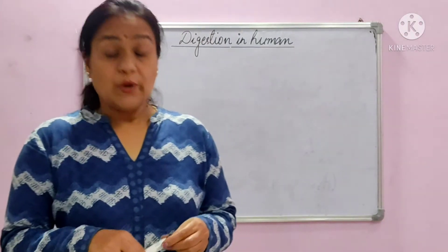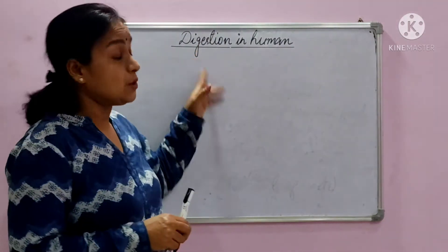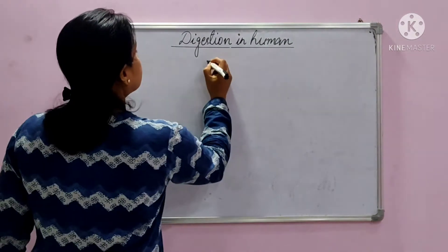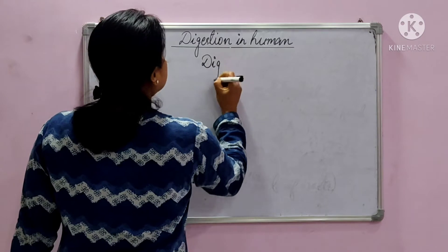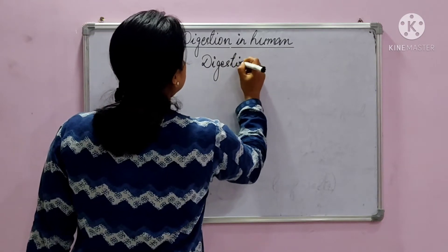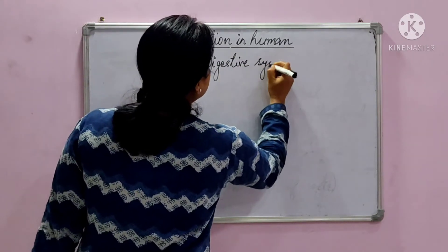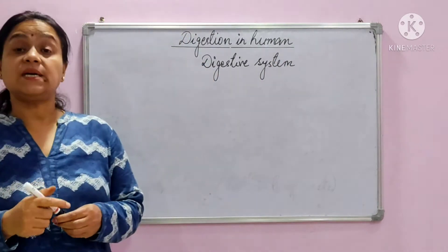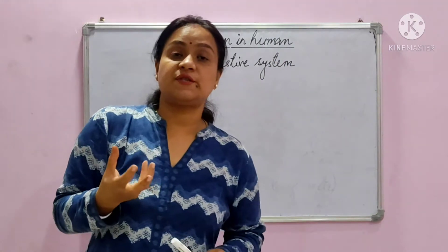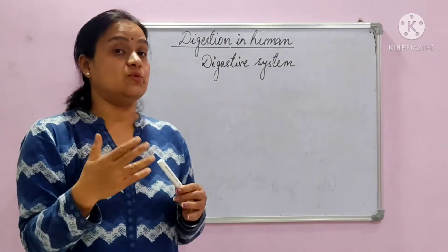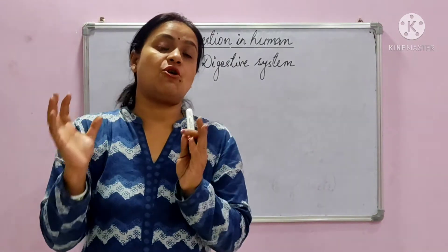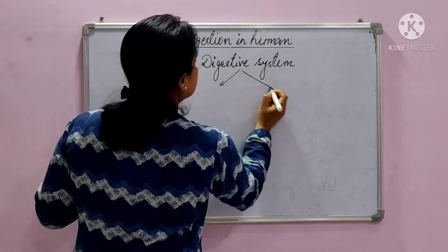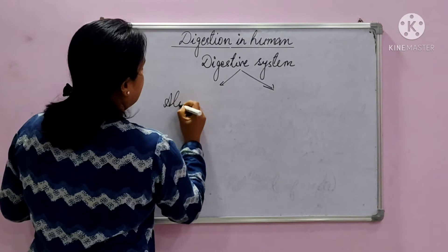Digestion in humans is carried out by the digestive system. The digestive system is actually a system of many organs. Basically, digestion in humans is carried out by two sets of organs. The first is the alimentary canal.